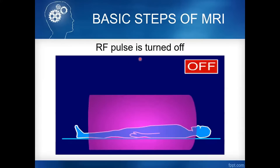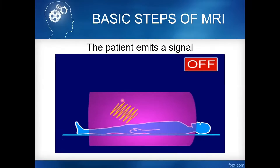The third step is the RF pulse turn-off. What happens here is relaxation — T1 and T2 relaxation. After turning off the RF pulse, the patient emits a signal. The term for the basic MRI signal is free induction decay.